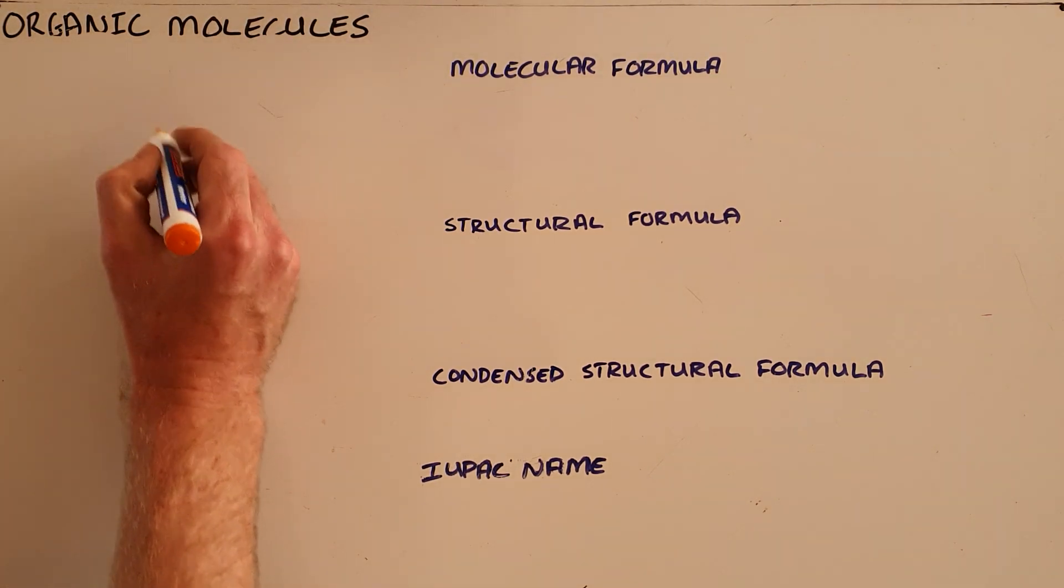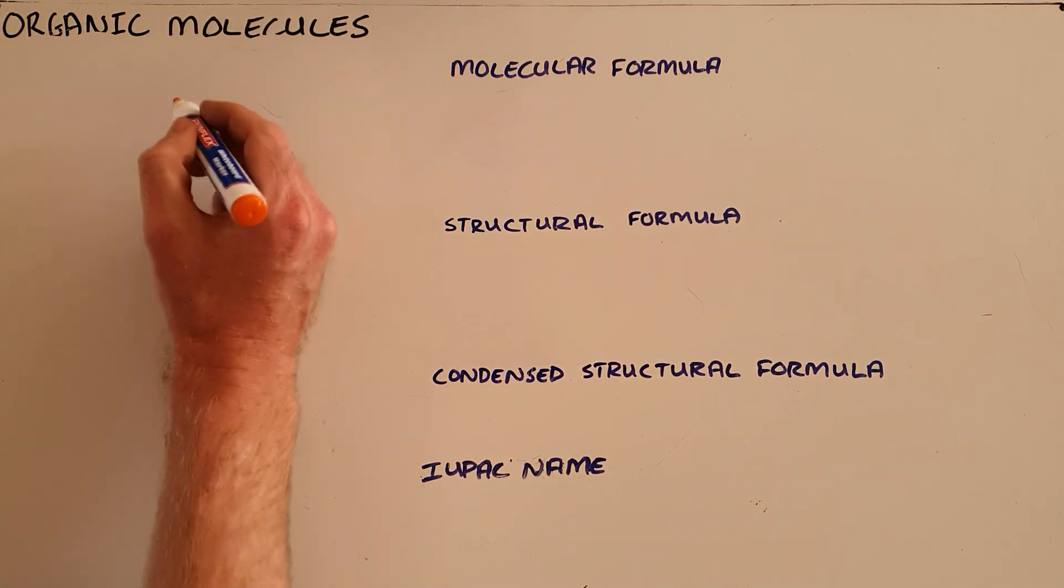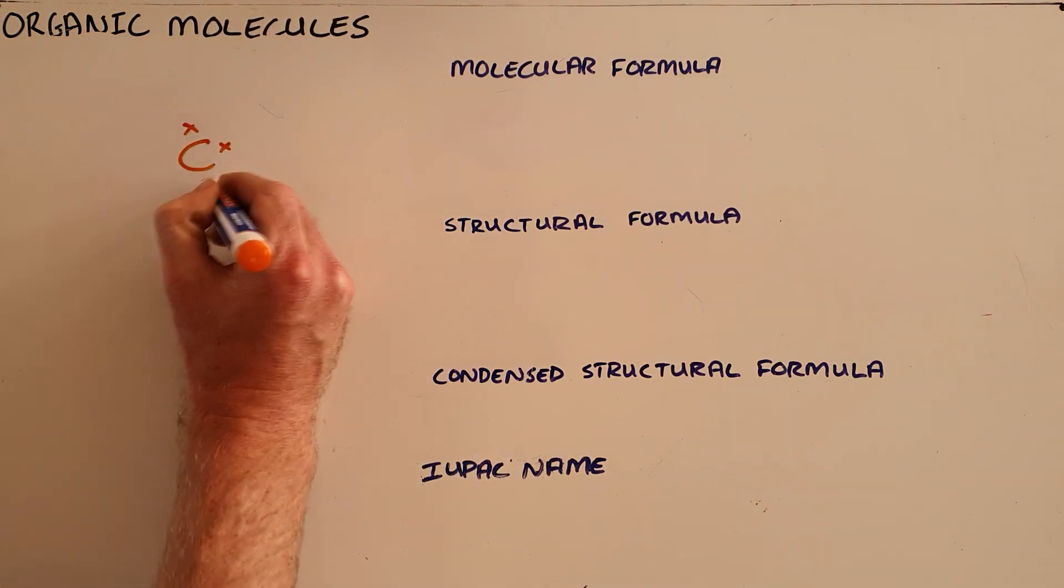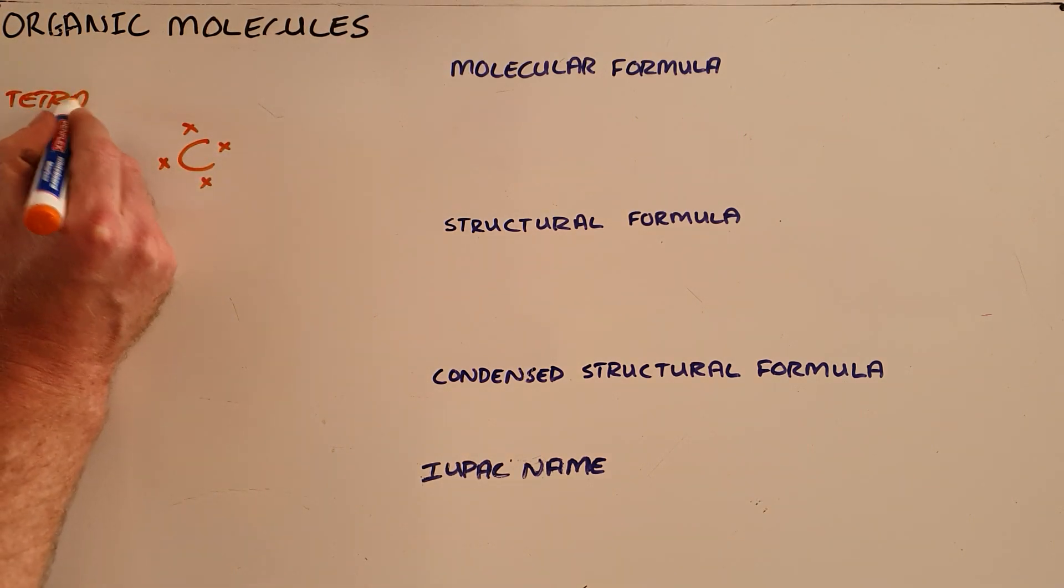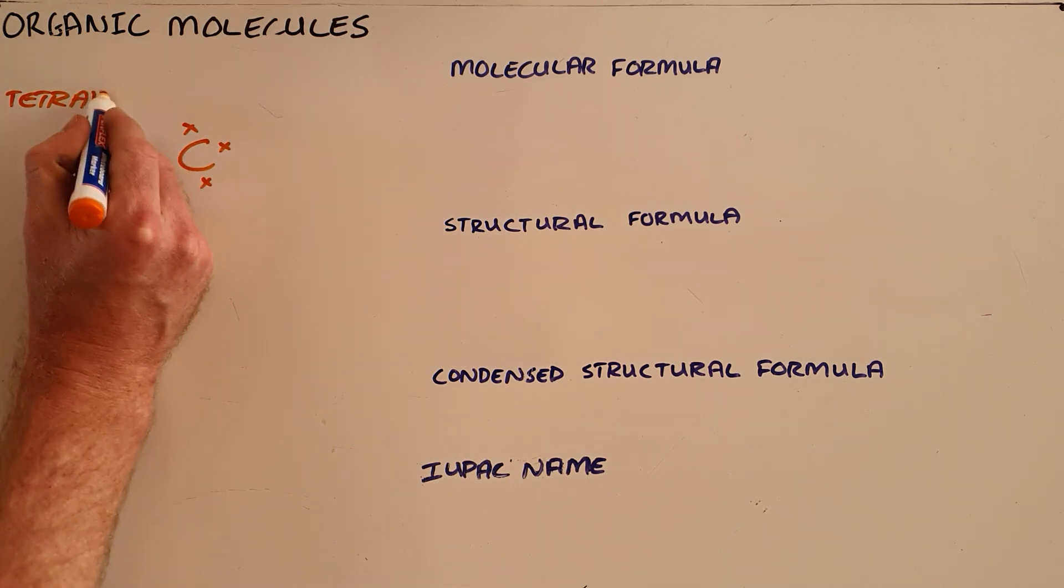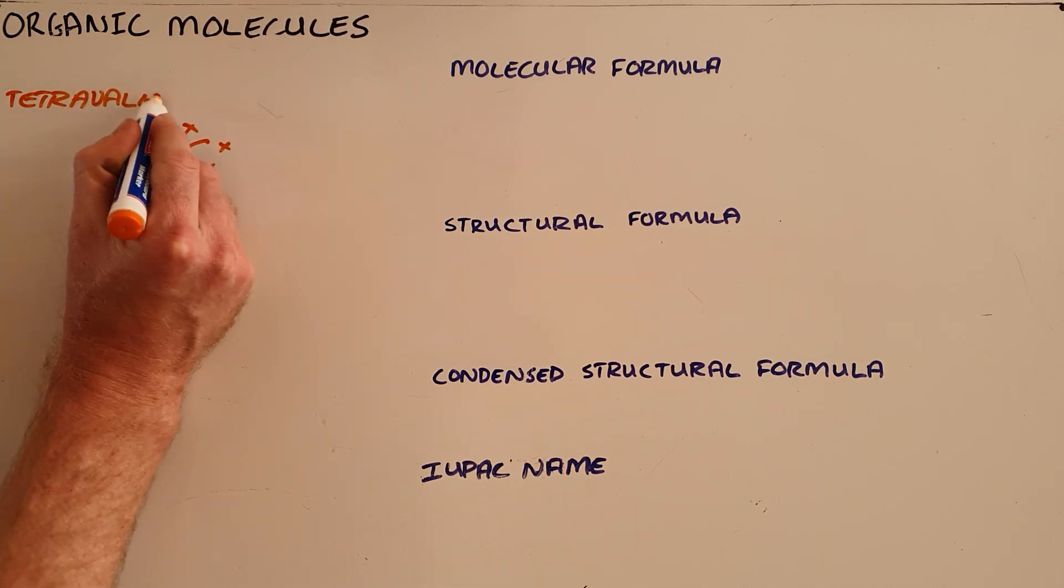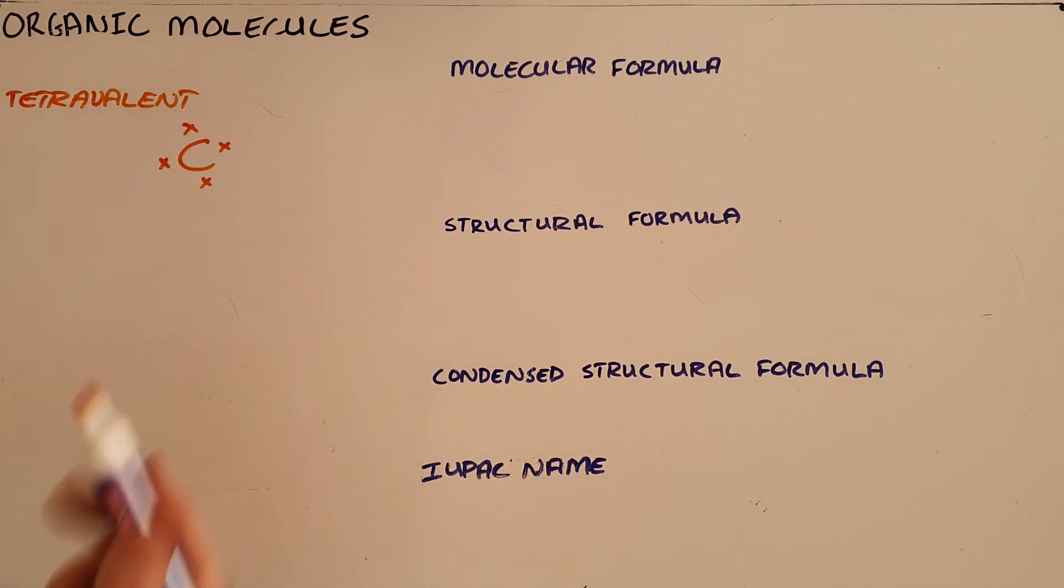The reason carbon is the fundamental basis for organic chemistry is because carbon is tetravalent. Tetravalent refers to its valency, meaning it has four valence electrons and as a result is able to form four bonds.